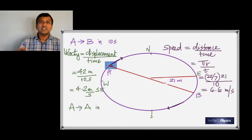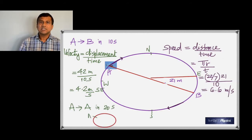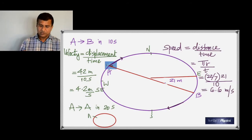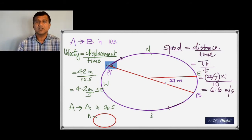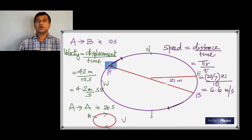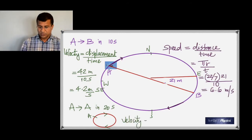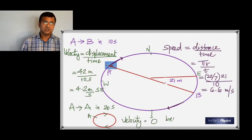What if the object travels a full circle and returns to where it started? If it goes along a circular path and comes back to the starting point, the velocity is zero because the displacement is zero — it ends up exactly where it began.